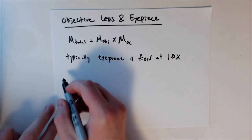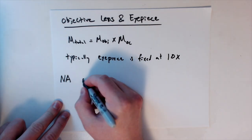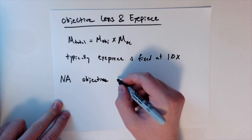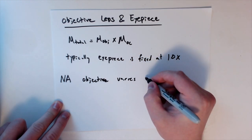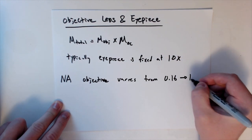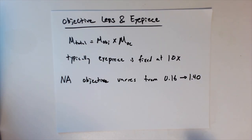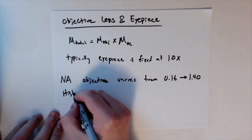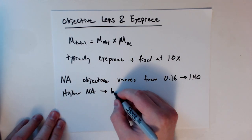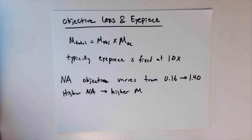All right, so the numerical aperture (NA), as we've talked about, for an objective lens varies from 0.16 all the way up to 1.40. And the takeaway from this, and how we can relate this to magnification, is the higher NA we have results in a higher magnification.